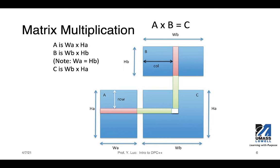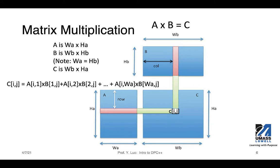The way we perform matrix multiplication is by taking rows from matrix A and columns from matrix B. Using these rows and columns, we do element-wise multiplication and then accumulation, and that will produce the final result in matrix C. Specifically, take C[i,j] as an example. This element in matrix C will be calculated by using the i-th row in matrix A and the j-th column in matrix B. We take every element from this row, multiply those with their corresponding element in this column in matrix B. These are element-wise multiplications, and then we accumulate the products, which gives us the final value in the corresponding location within matrix C.